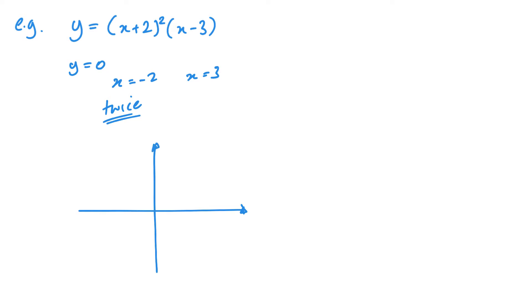So just before we do look at the sketch, let's look at what happens when x is 0. So that's 2 squared minus 3. So that's what's happening for y. 4 times negative 3, negative 12. Now let's look at our two points. So minus 2 and 3. And obviously we're going to hit on negative 12 here.